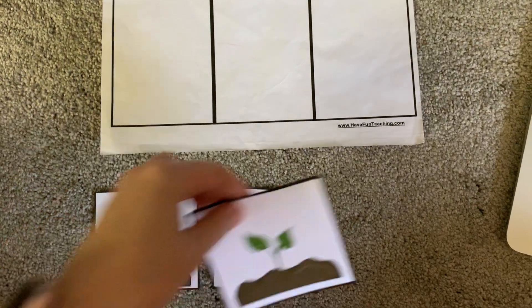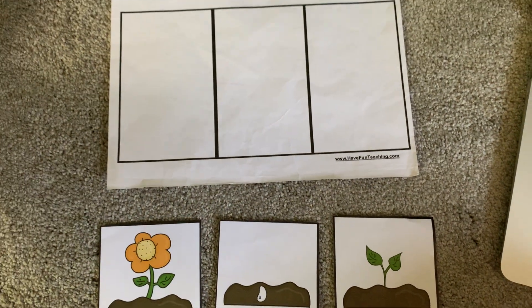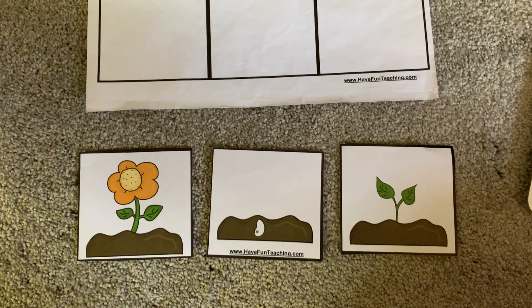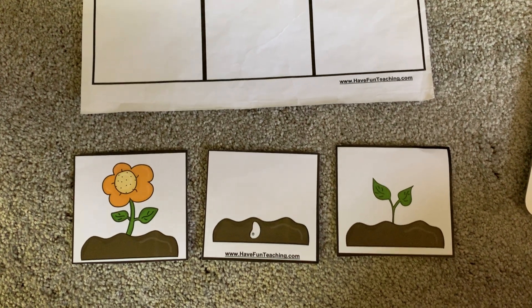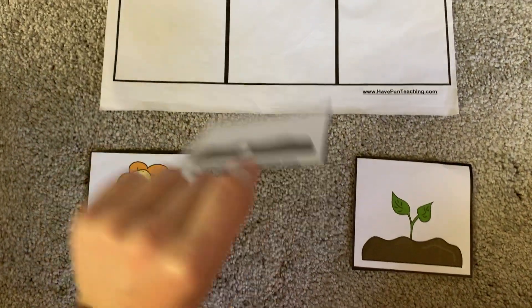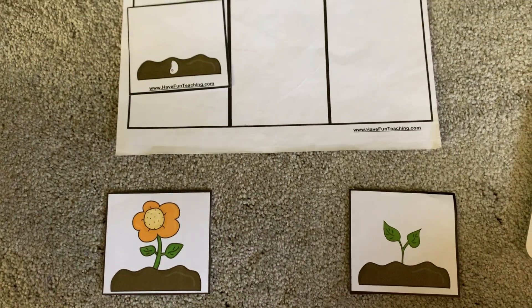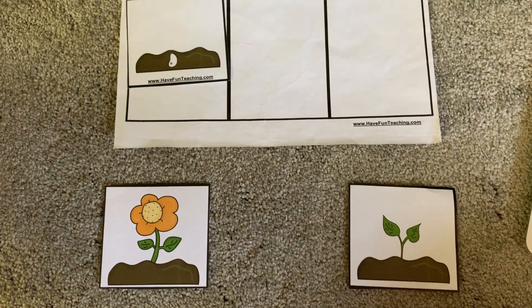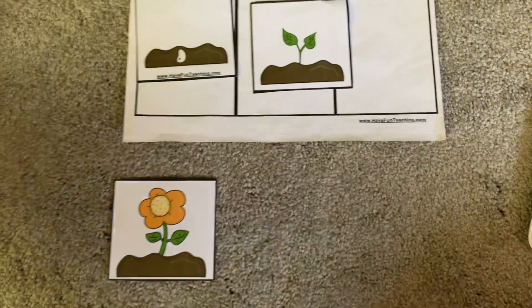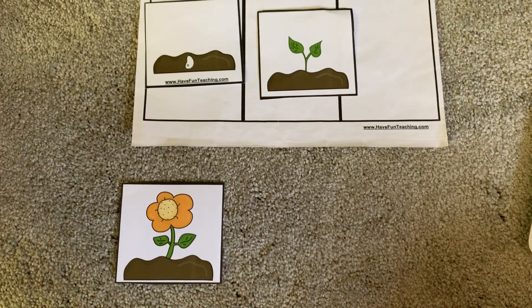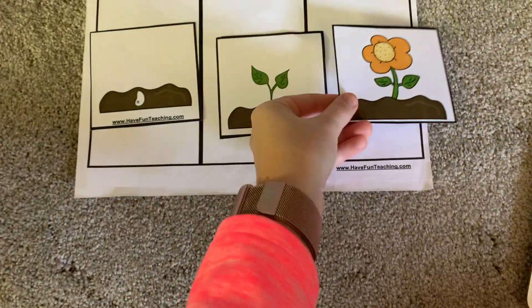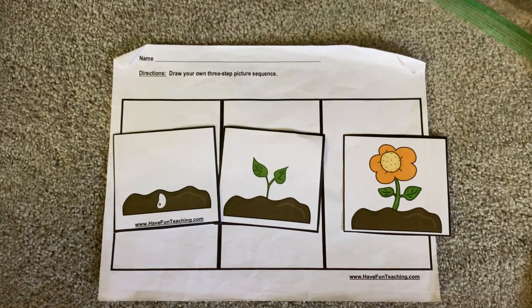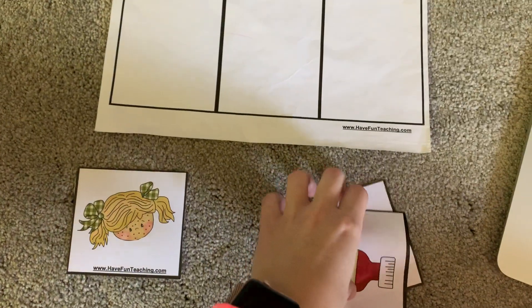When you put things in order, it just makes sense — your first, second, and last, then you have your sequence. When you want to grow a flower: first you plant the seed, next comes the sprout, and last you have the flower. Good job!